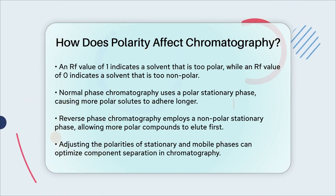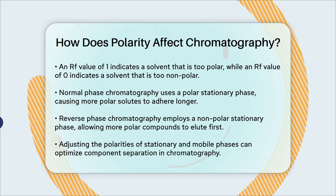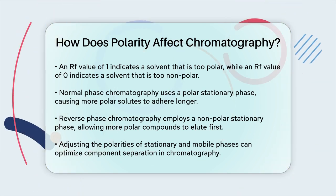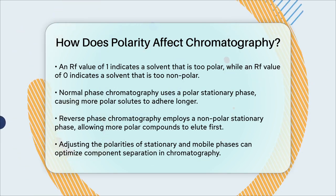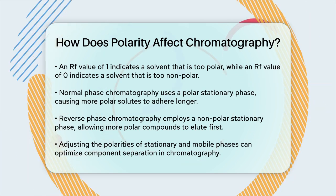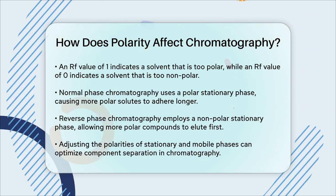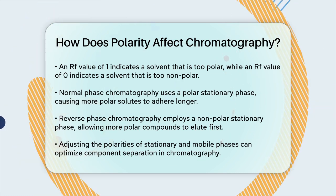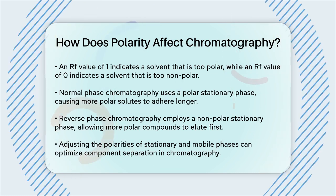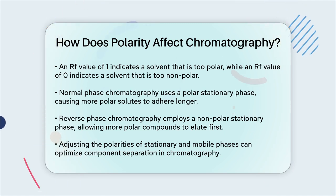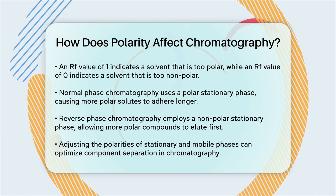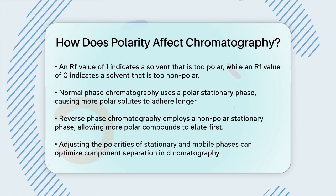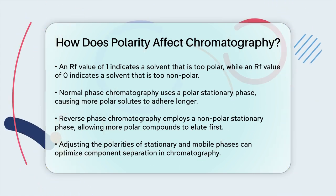Understanding the polarity of substances and how it affects their movement in chromatography is key to predicting and interpreting the results. By adjusting the polarity of the stationary and mobile phases, you can optimize the separation of components in your mixture. To sum it up, the polarity of substances determines how quickly they move through a chromatography system and how well they separate from each other. It's all about the balance between the polarities of the substances, the stationary phase, and the mobile phase.